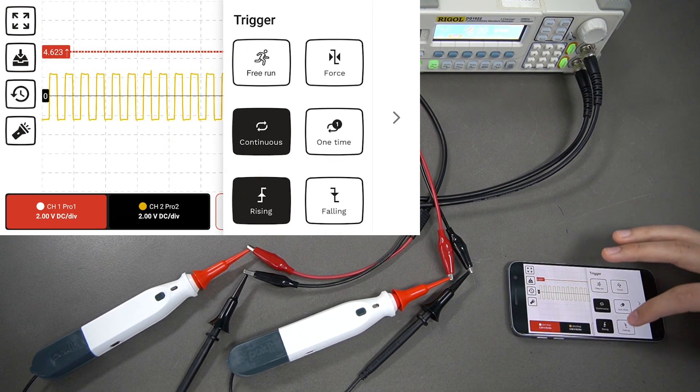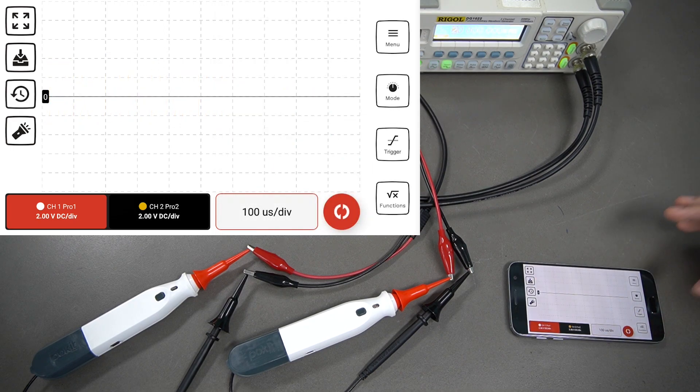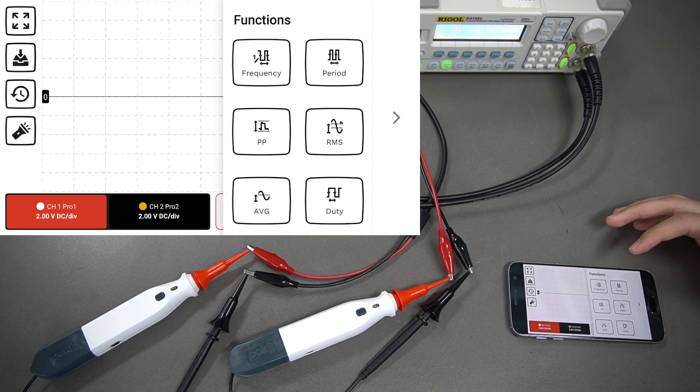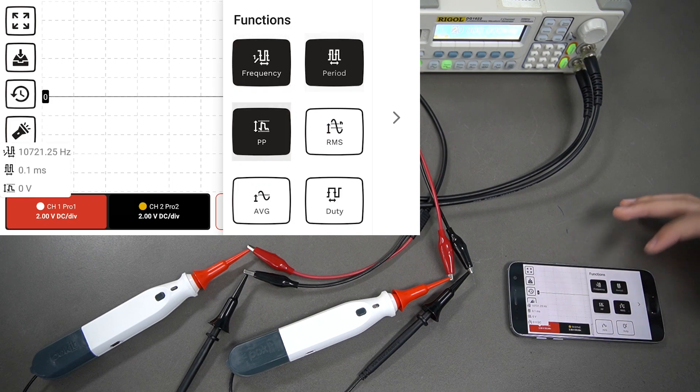You can change it to rising and falling as well. Just switch that there. Down the bottom right here, we have the functions button. Select that and we've got a few different functions we can look at: frequency, period, peak-to-peak, RMS, average, and duty.